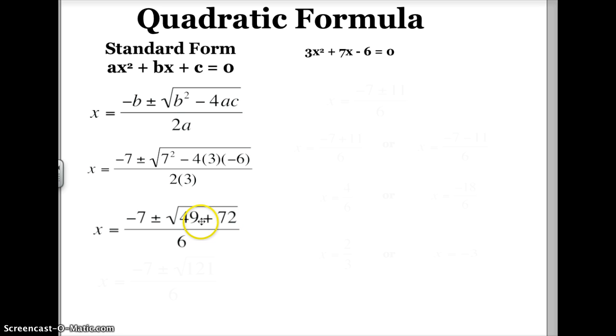The next thing I'm going to do is solve what's under the square root sign. So I have x, or the roots, or the x-intercepts, are equal to -7 plus or minus the square root of 121, divided by 6.